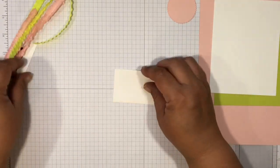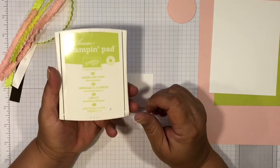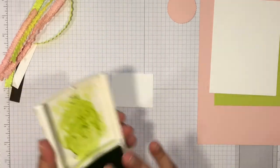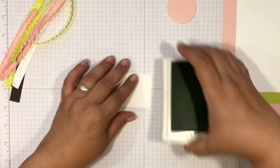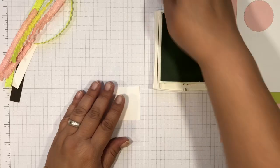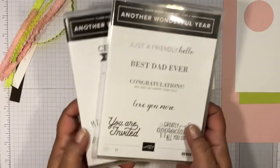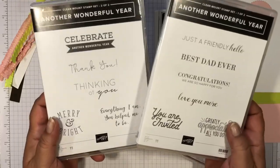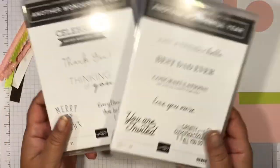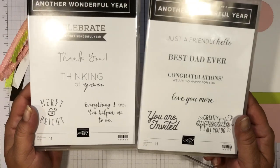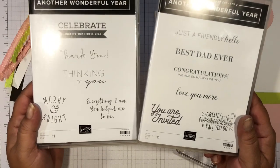The first thing we're going to do is get our stamping done. We're going to be using lemon lime twist. This is the only stamping on this card. We're going to be using the Merry and Bright from the Just Another Wonderful Year stamp set.